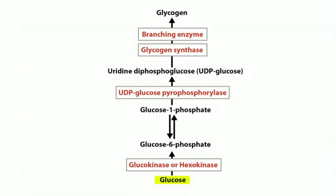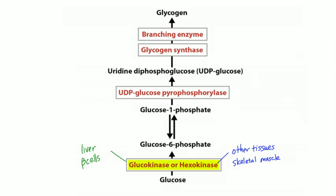Glycogenesis begins with glucose. You have to trap it in the cell by phosphorylating it — adding a phosphate group to make glucose-6-phosphate. The two enzymes responsible are glucokinase and hexokinase. Glucokinase is found mainly in the liver and beta cells of the pancreas; hexokinase is found in other tissues. So in skeletal muscle, glycogenesis starts with hexokinase. Then the phosphate group moves from the sixth carbon to the first carbon to make glucose-1-phosphate — this is different from glycolysis, which went from glucose-6-phosphate to fructose-6-phosphate.